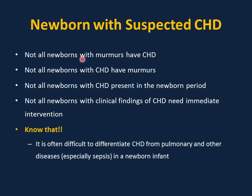Not all newborns with murmurs have congenital heart defect — for example, a murmur in the first few hours after birth from a closing ductus is normal and benign. Not all newborns with congenital heart defect have murmurs. For example, cases of VSD or AV canal defect may not have a murmur after birth, and as pulmonary vascular resistance drops and left-to-right shunt increases, you will be able to hear the murmur afterward.